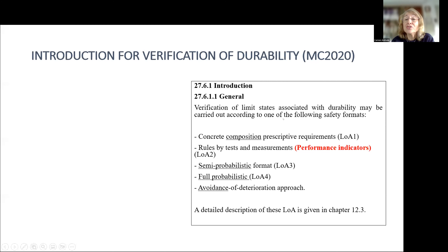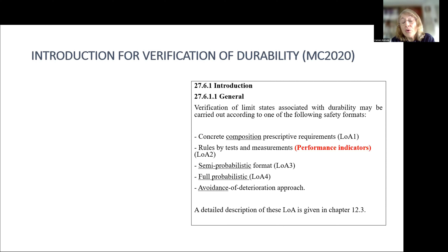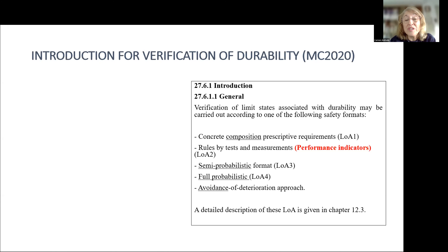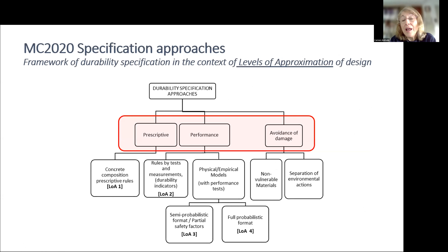For the verification of limit states associated with durability, we have five levels of approximation. The first is concrete composition. I want to mention that we decided to call it concrete composition rather than 'deemed to satisfy,' because Steiner was right that indicators also deem to satisfy a condition — so why mix the two levels? We split them because one is the concrete composition, and Level 2 could be the performance or durability indicator: an additional test, not just composition or a prescription. After that we have Level 3 and Level 4, and then avoidance of deterioration.